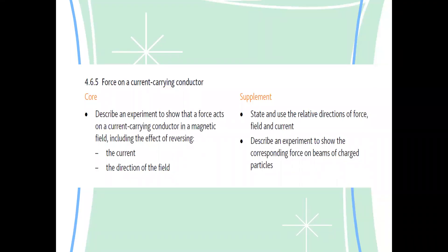Now, force on a current-carrying conductor — basically what happens when wires are carrying current. There are two magnetic fields when a wire carries current in a magnetic field. For example, if we have a permanent magnet, there is a magnetic field of the permanent magnet. And if there is a wire carrying current, there is a magnetic field of the wire. Whenever there are two magnetic fields, they always interact with each other and exert force on each other.